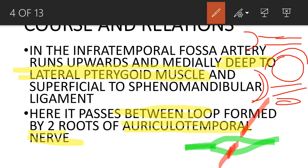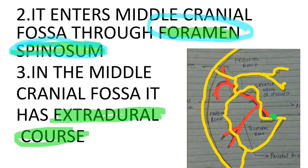Next, the artery passes between the loop formed by the two roots of the auriculotemporal nerve. As shown in the diagram, the green structure represents the auriculotemporal nerve forming a loop, and the red artery passes through that loop. This is another important point to remember regarding the middle meningeal artery.